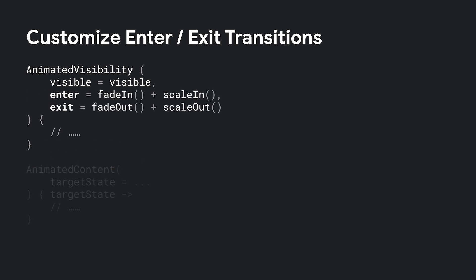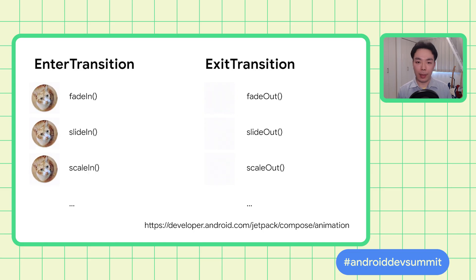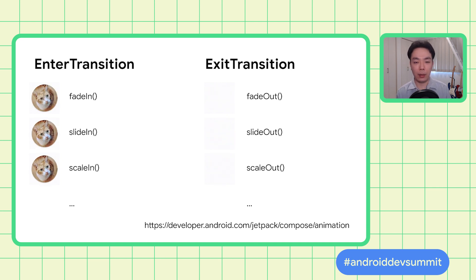Both animatedVisibility and animatedContent provide a reasonable default animation style, but of course we can customize them. For animatedVisibility, we can customize its enter and exit transitions. For animatedContent, we can customize the combination of enter and exit transitions using the transitionSpec parameter. Here's a list of some enter and exit transitions: fade-in, fade-out, slide-in, slide-out, scale-in, and scale-out. They all have obvious names. There are more options, so please refer to the documentation for the complete list.